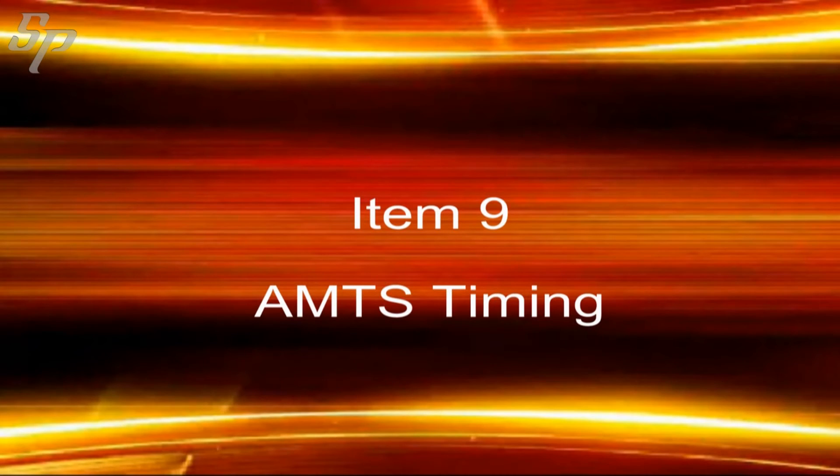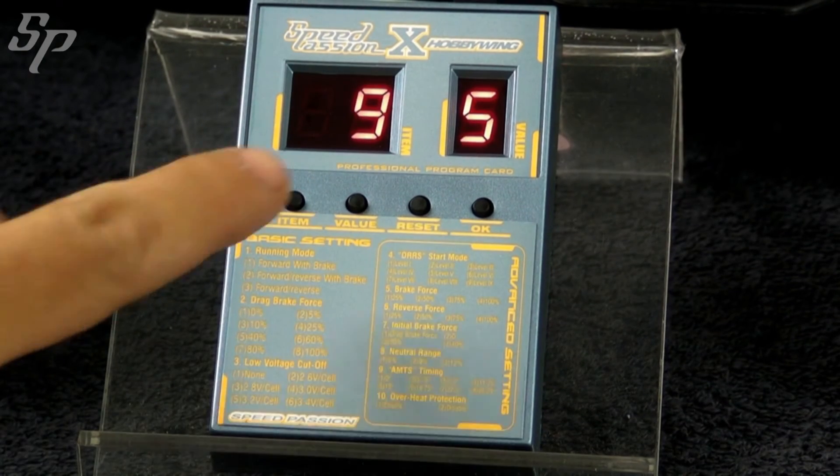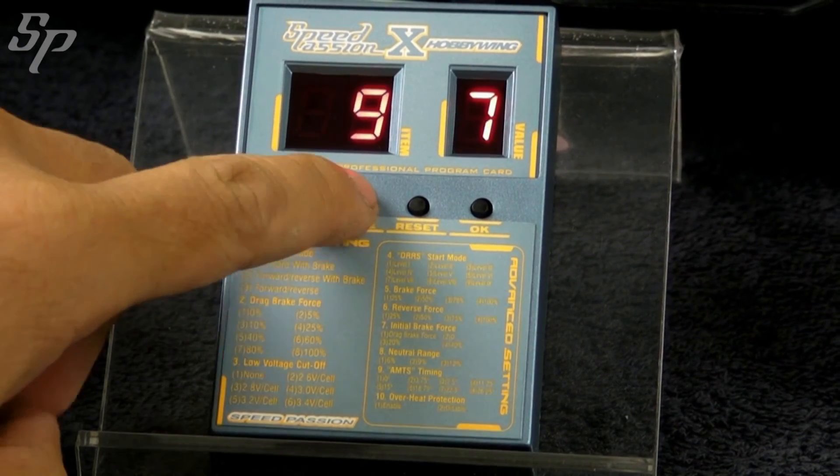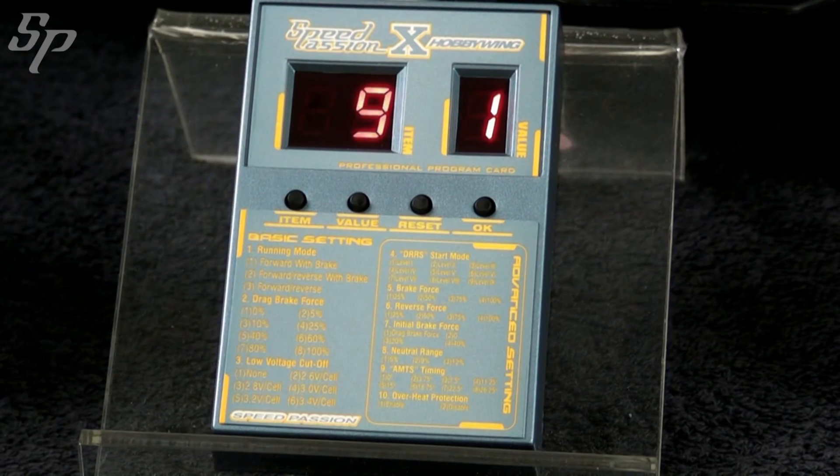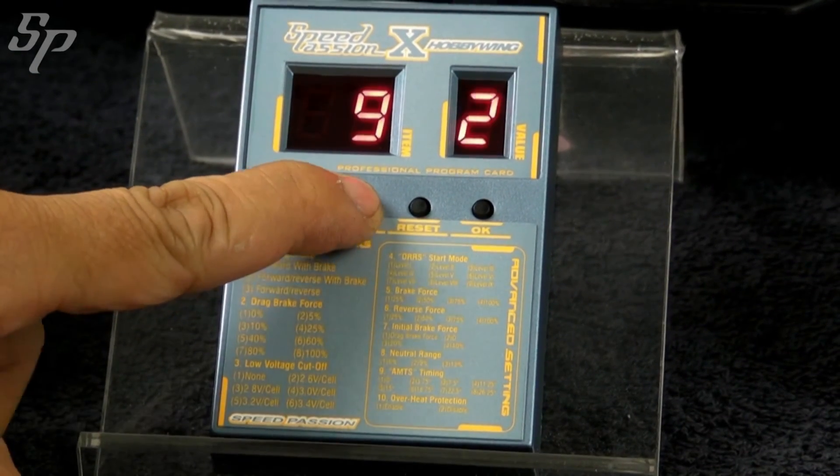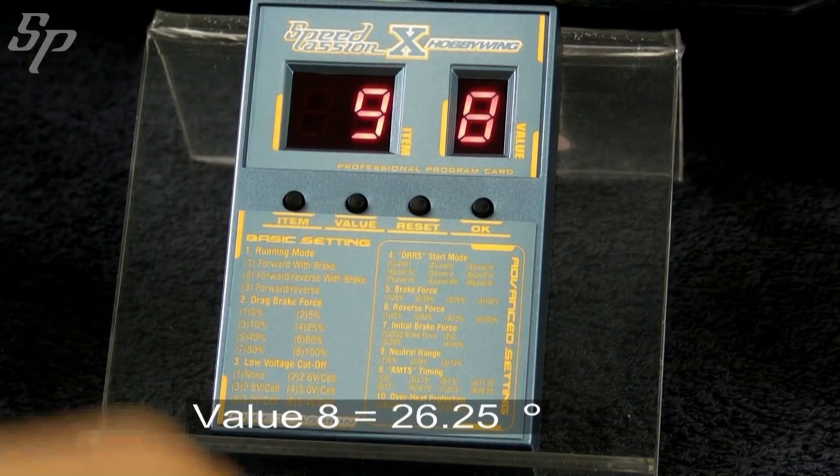Item 9 is about the AMPS timing. When the value is 1, you will get a relatively average motor performance. When the value is higher, you will get more motor performance at the end.